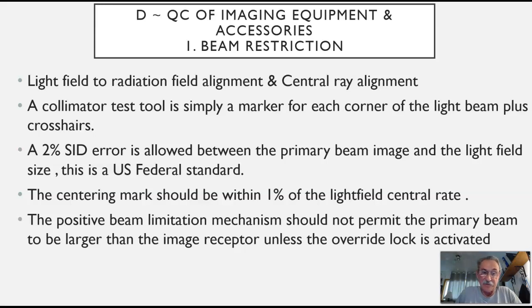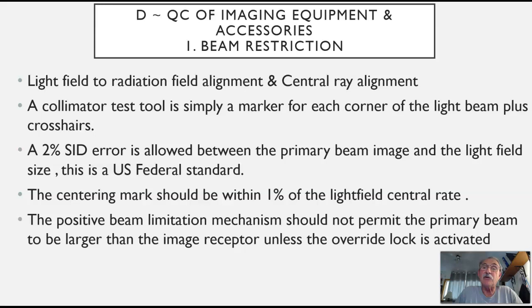I'm going to dive into the last section of this content specs for the limited scope. This is from page 8, section 2D, Quality Control of Imaging Equipment and Accessories. Quality control is the maintenance and documentation of the equipment that we use. This is part of the larger quality management system, and there are quite a number of processes that go on in the successful operation of a radiology department. The one we're interested in here is quality control — maintaining and keeping our equipment operating within the manufacturer's recommendations.